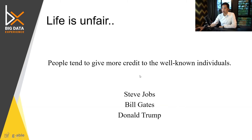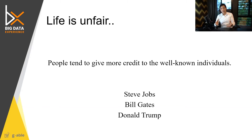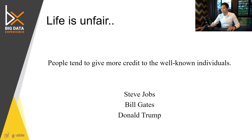Although there are some that are not scale-free, many have preferential attachment in nature. In the scientific community and in actual communities, people tend to give more credits to well-known individuals. That includes Steve Jobs — people often say he is brilliant, but his inventions come from the team itself. Bill Gates, Donald Trump — sometimes more credit is given than may actually be deserved.